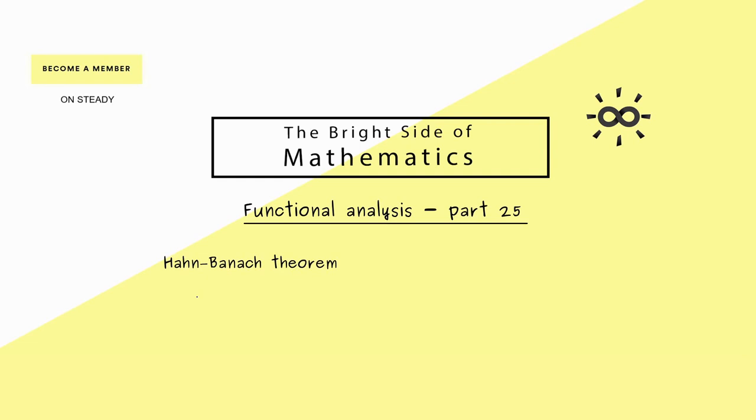There are different versions of the theorem but the most important one is the one that holds for normed spaces. Now please recall if we have a normed space X we can consider all the continuous linear functionals which we denoted by X prime. The famous Hahn-Banach theorem now tells us that this X prime is in some sense large. In fact this implies that we can use X prime to analyze the original space X.